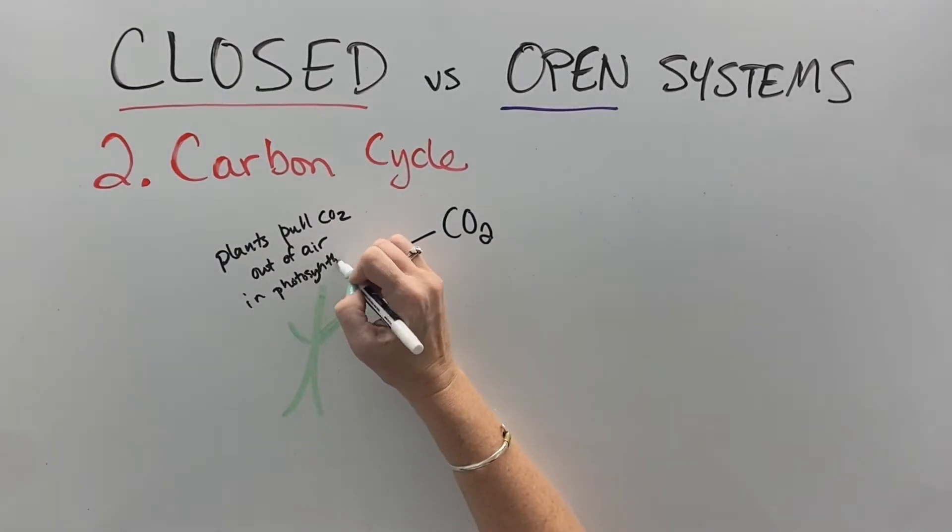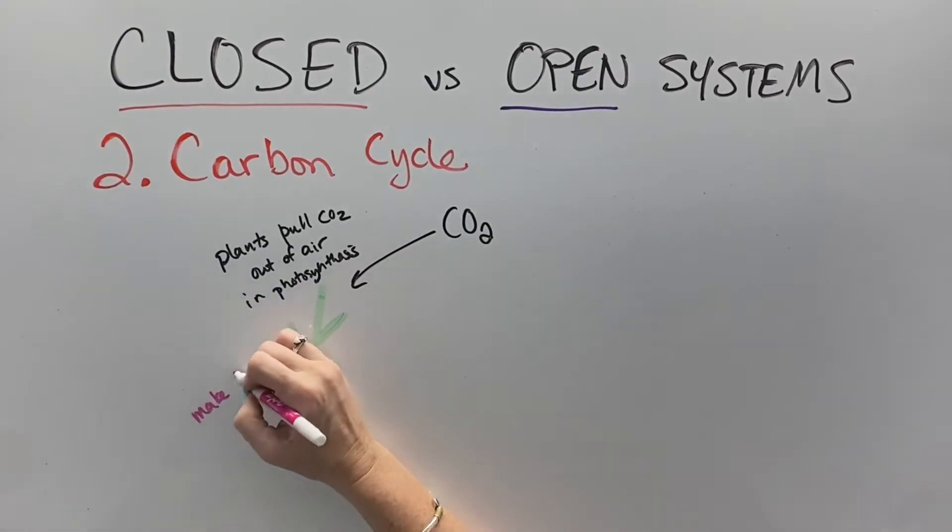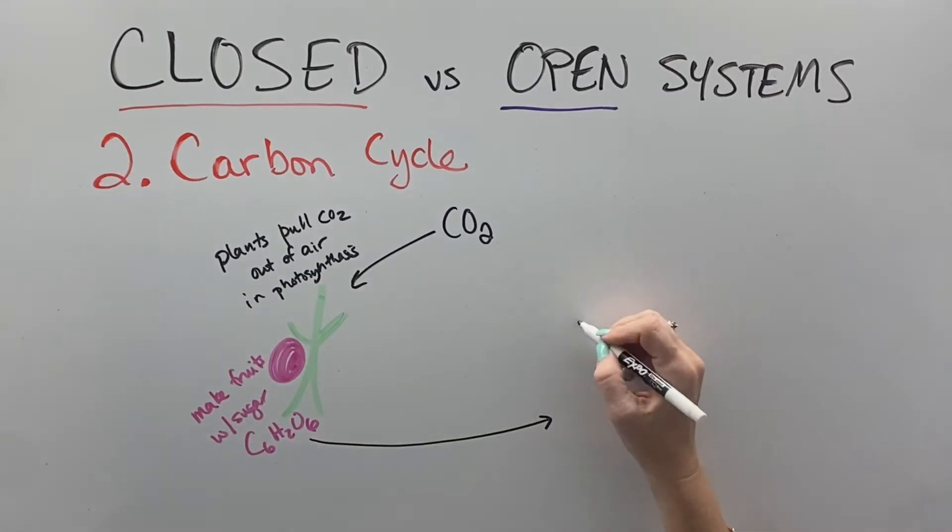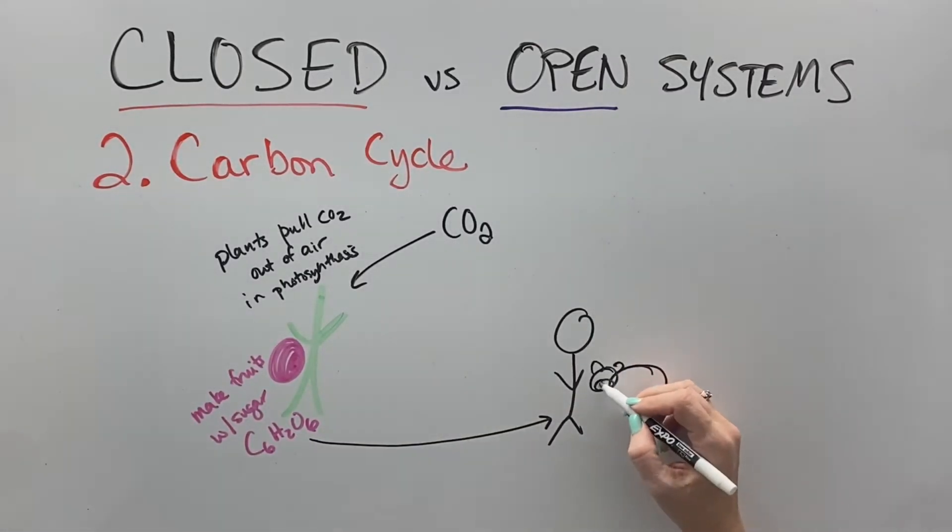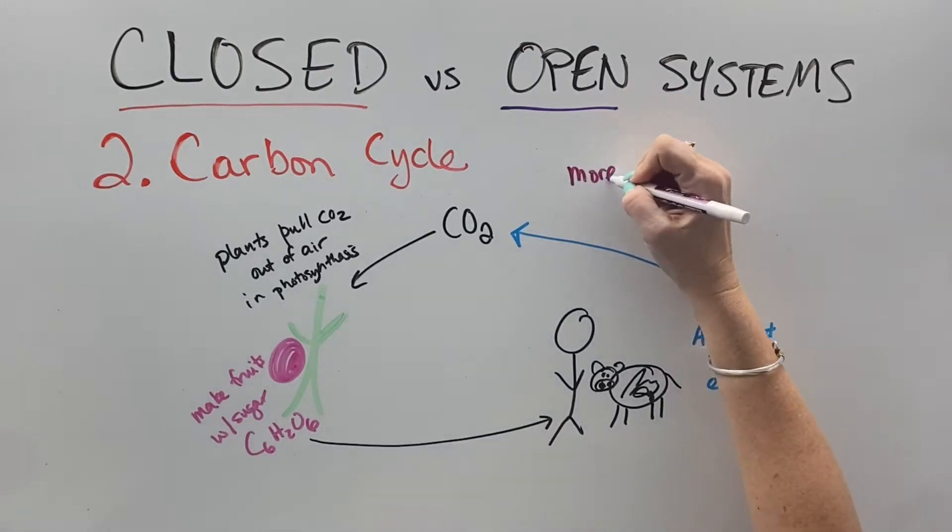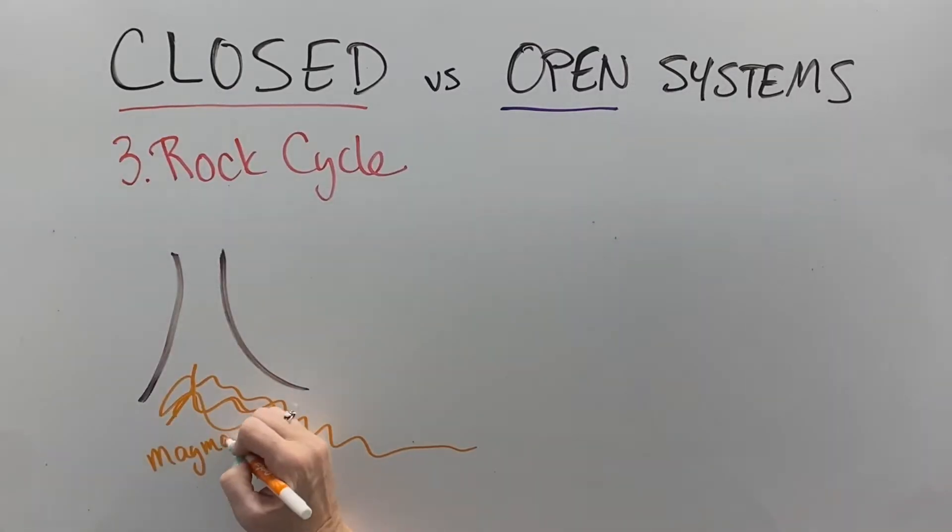Carbon's another great example where there's carbon dioxide in the air. Plants pull that out through photosynthesis and chemically react CO2 and water along with sunlight as a catalyst to make sugar, C6H12O6. Then animals eat that sugar and use the oxygen that the plants made through photosynthesis to create carbon dioxide. There's more going on with the carbon cycle, but you get the idea that carbon just cycles around and around. No carbon comes in or leaves the planet.